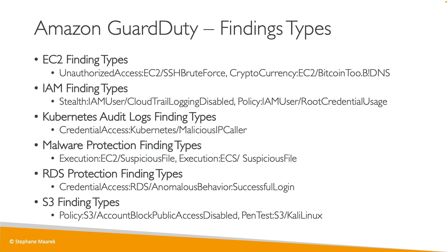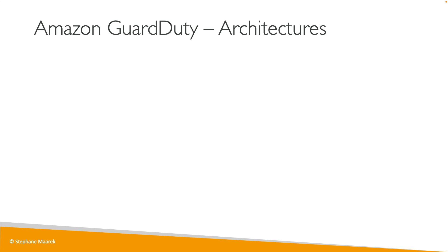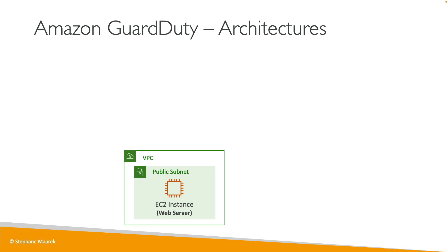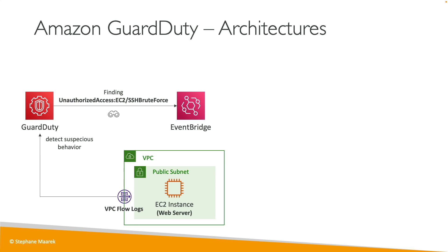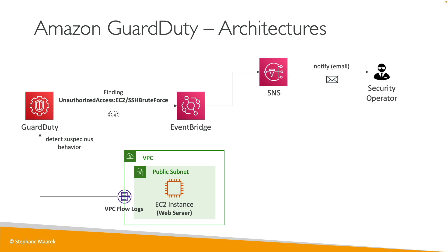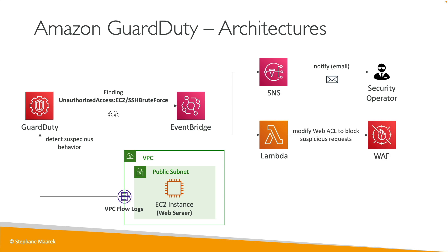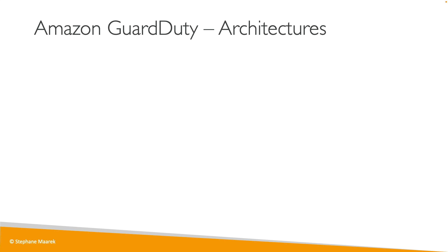Let's look at some architectures. For an EC2 instance in a VPC, GuardDuty analyzes the VPC Flow Logs, generates findings — for example detecting an SSH brute force attack on the EC2 instance. EventBridge generates an event for this: we can hook it up to SNS for email notifications to security operators, and also use a Lambda function. That Lambda function can do two things: create a Web ACL to block suspicious requests using WAF attached to a load balancer, or automatically update the Network ACL to block the malicious IP.